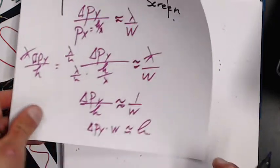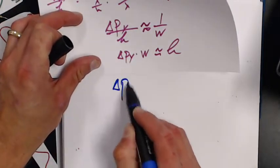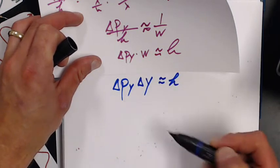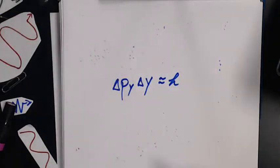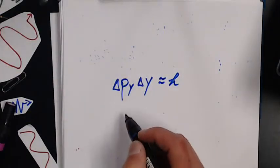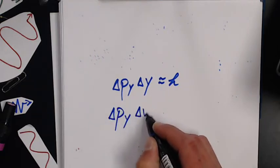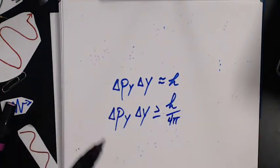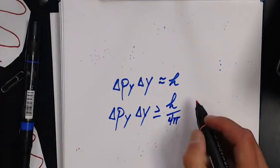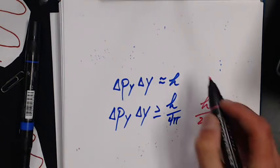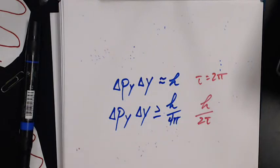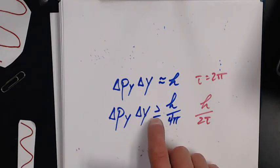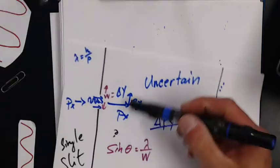So now this becomes the uncertainty in my momentum in the y-direction times my uncertainty in where it's coming through the slit is related to Planck's constant. In fact, more realistically, it's h over four pi, or in my case I really like using tau, it's h over two tau where tau is two pi. Notice I got the two in there, I got tau, I got h, this looks a little bit better.